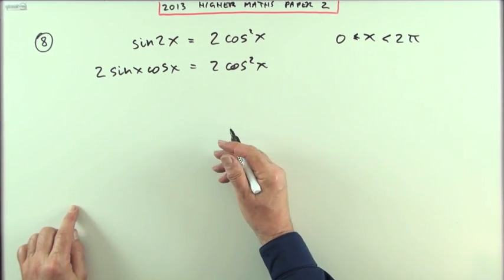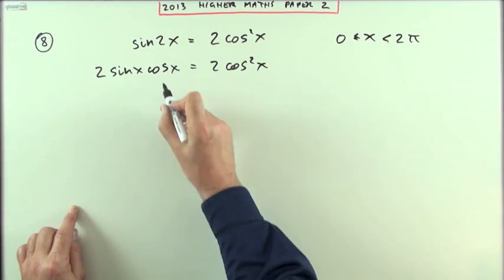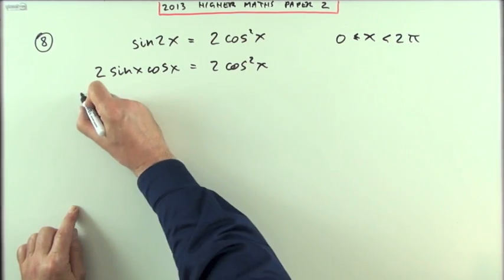Now it's not a quadratic that you're going to factorise, but you're still going to take it to one side and factorise it by looking for common factors, because I can see them there.